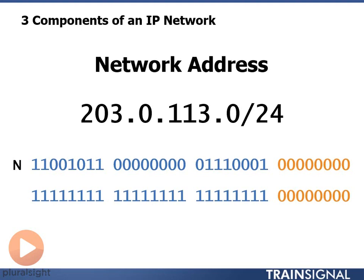The first address is the network address. The network address has all zeros in the host portion of the address. I know where the host portion of the address is because my subnet mask tells me where the host portion of my address is.